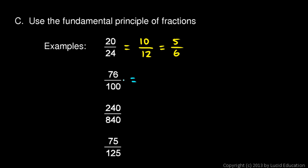Next example: 76 over 100. Both 76 and 100 are divisible by 2, and dividing by 2 is pretty easy when you see even numbers. 76 divided by 2 is 38, and 100 divided by 2 is 50. Again, both even: 38 divided by 2 is 19, and 50 divided by 2 is 25. Since 19 is prime, we're done — 19/25 is simplest form.